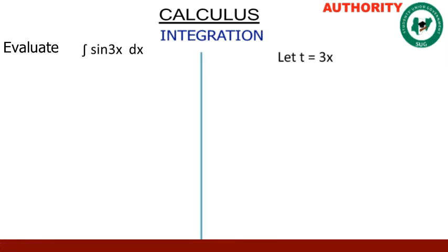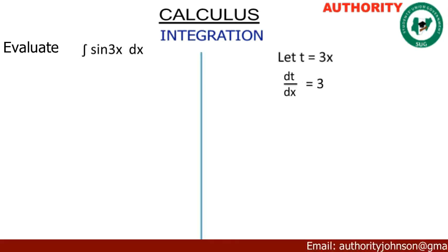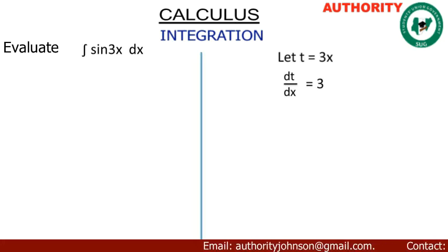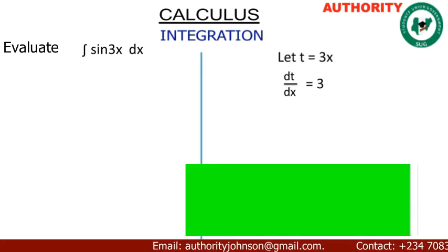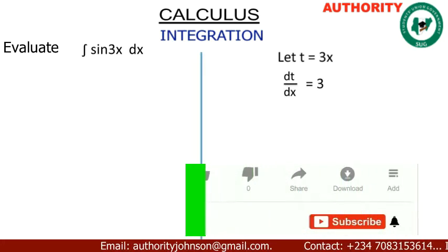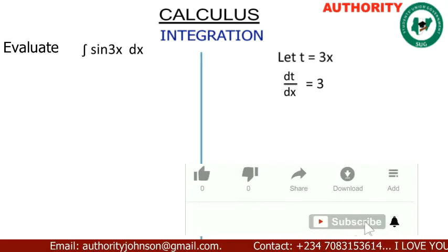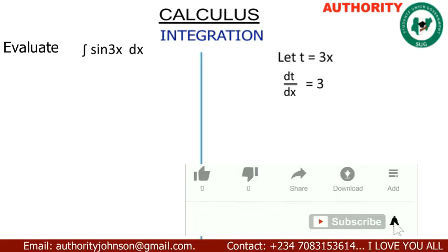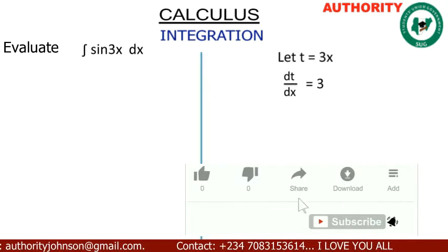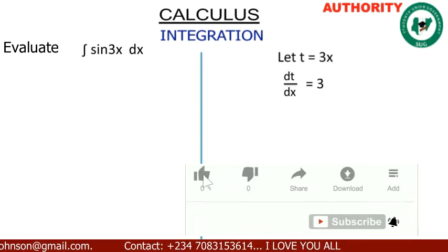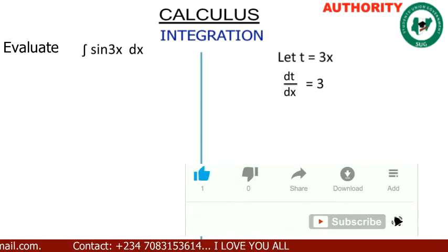We are going to say let t equal to 3x. From here we are going to find the derivative of t — that means we are going to find dt/dx. When you differentiate 3x it is going to give you 3, so dt/dx is equal to 3.